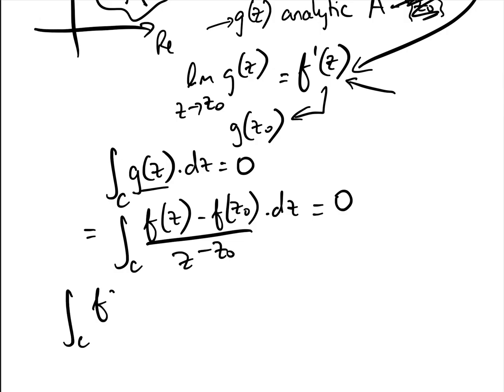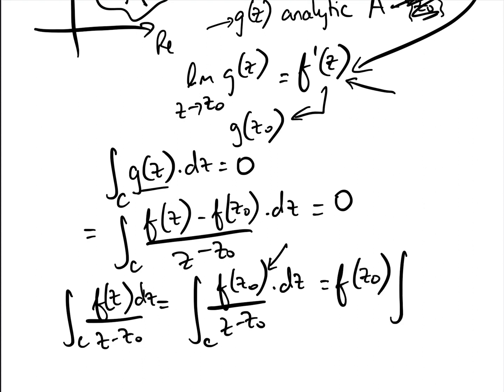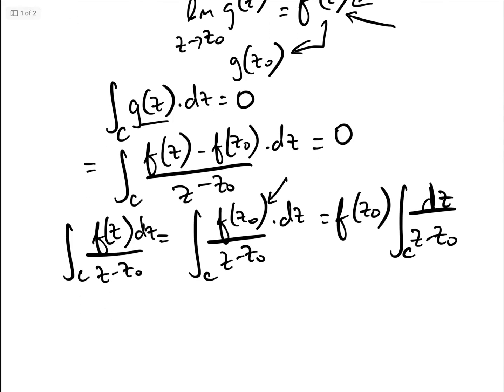And that, therefore, means that the integral of f of z over z minus z0 around the curve of z equals the integral of f of z0 over z minus z0 dz around the curve of z. So basically, and we know that f of z0 is a constant, because it's just the value of f at the point z0. So that equals f of z0, the integral of 1 over z minus z0 dz around the curve of z. And in the previous video that we did, we have already established here that the integral of 1 over z minus z0 around z is equal to 2 pi i.